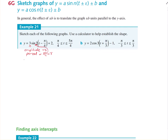There's a phase shift — I'll use the word translation this time, I keep using different words on purpose — so the horizontal translation is pi on 4 to the right, and the vertical translation is 2.